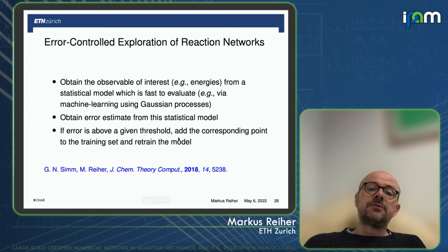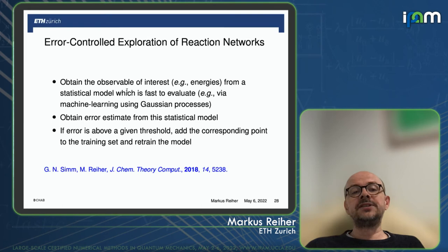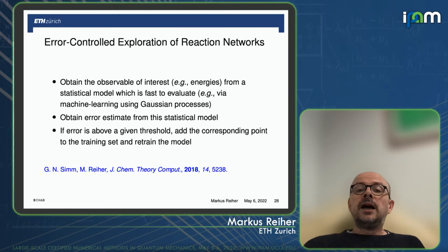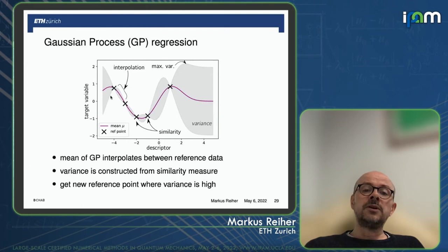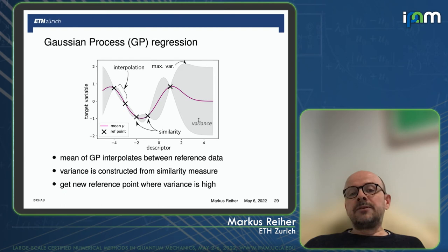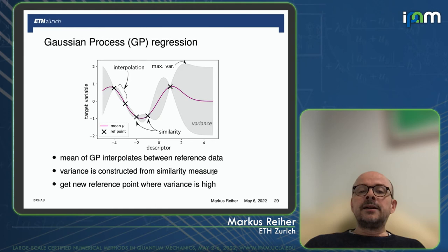Let's do that for reaction network exploration. We obtain our observable of interest — typically energy — from the Gaussian process, and we get an error estimate from the statistical model. If this error estimate is above a given threshold, you create reference data. The new reference data is added to the training set and you retrain the model. You see reference points as black crosses, and where you lack data the variance will be large, constructed from the similarity measure.